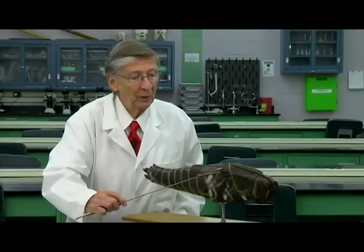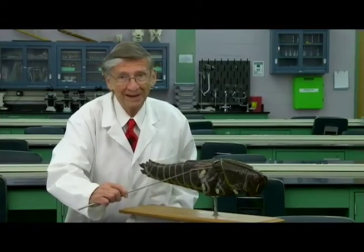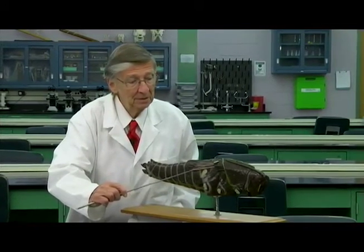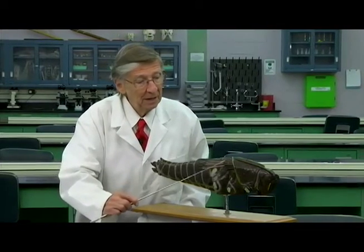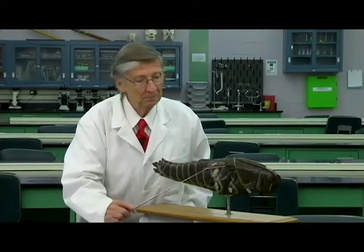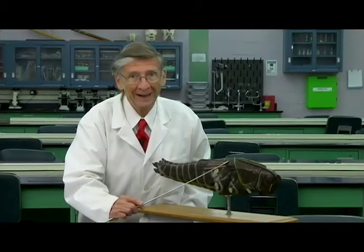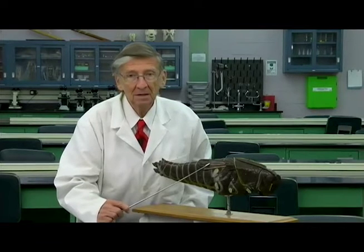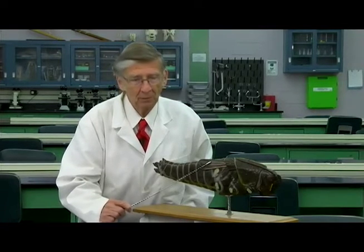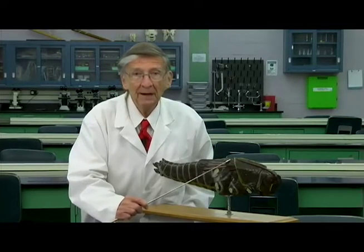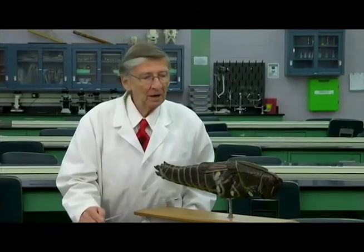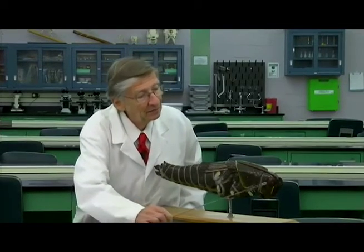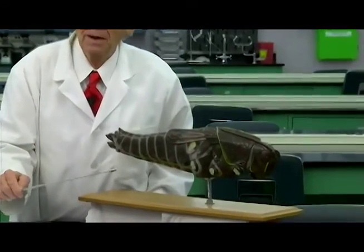Insects usually have two pairs of wings — not always; lice do not have wings, but the grasshopper does. Most insects have two pairs of wings. This part has been cut so you can see the outer wing and the second wing: one for protection, one for flying. Two pairs of wings — typical for insects. Insects also have nice compound eyes.